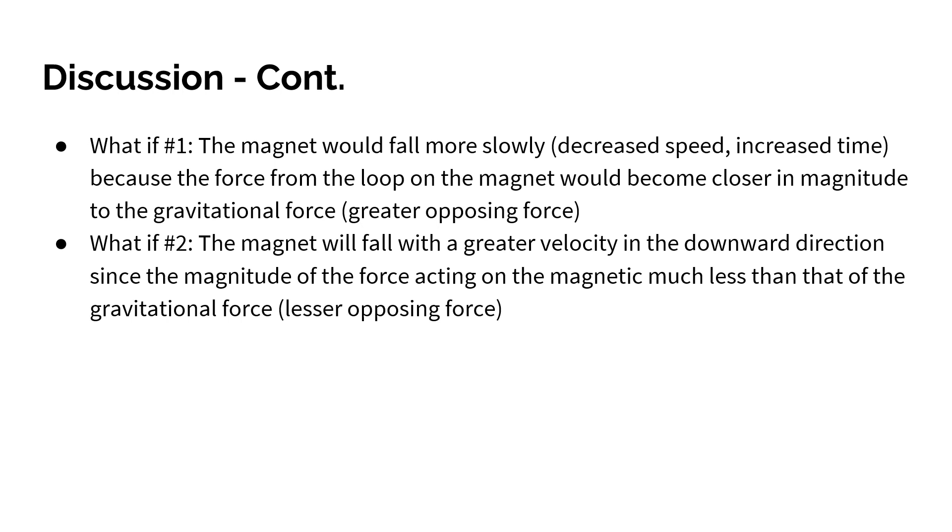What if number two: The magnet will fall with a greater velocity in the downward direction since the magnitude of the force acting on the magnet is much less than that of the gravitational force, meaning a lesser opposing force is acting on the magnet. This will increase the speed and decrease the time that it takes the magnet to fall.